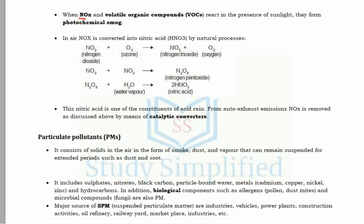When NOx and VOCs (volatile organic compounds) react in the presence of sunlight, a phenomenon called photochemical smog is produced. In the air, NOx is converted into nitric acid, which is one of the constituents of acid rain. NOx can be removed from auto exhaust emissions by means of catalytic converters (catcon systems).